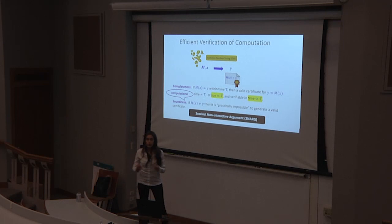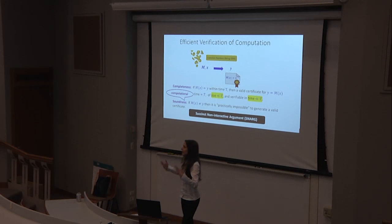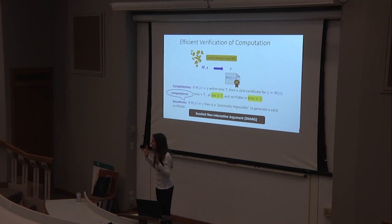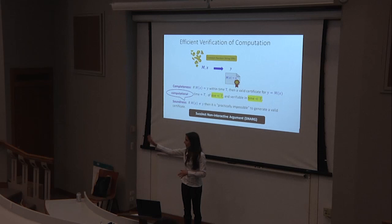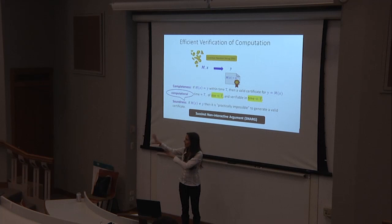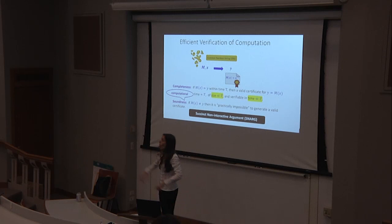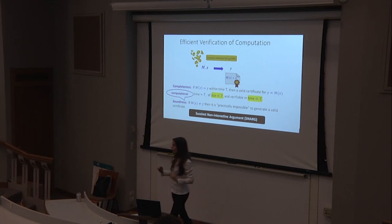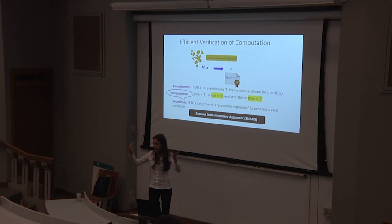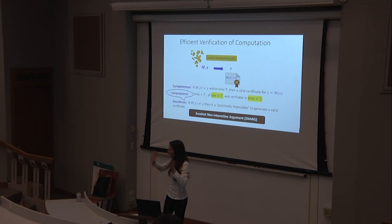Who chooses the CRS? In the schemes I'll show today, the CRS consists of a hash function — just an agreed-upon off-the-shelf function like SHA-256, so there's no real CRS hurdle. But sometimes the string is much more complicated, and in some companies today there's a huge multi-party computation to generate it. In those cases it's a significant bottleneck.